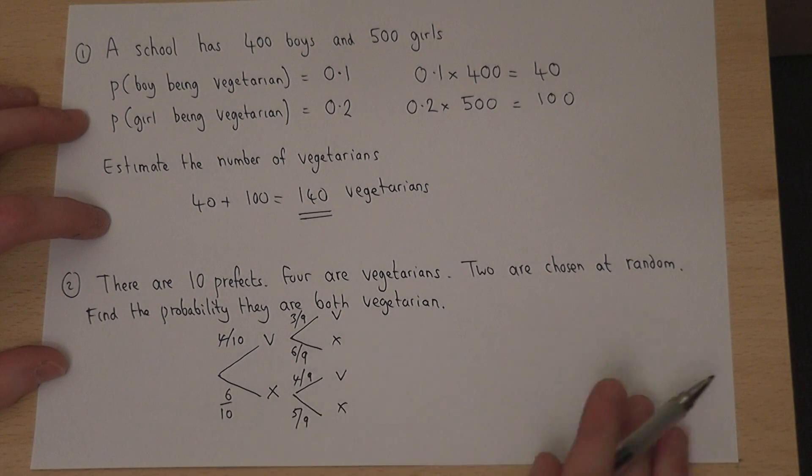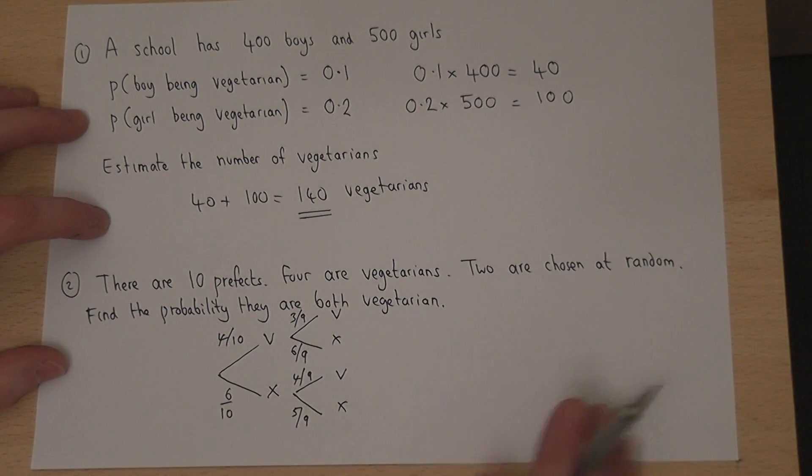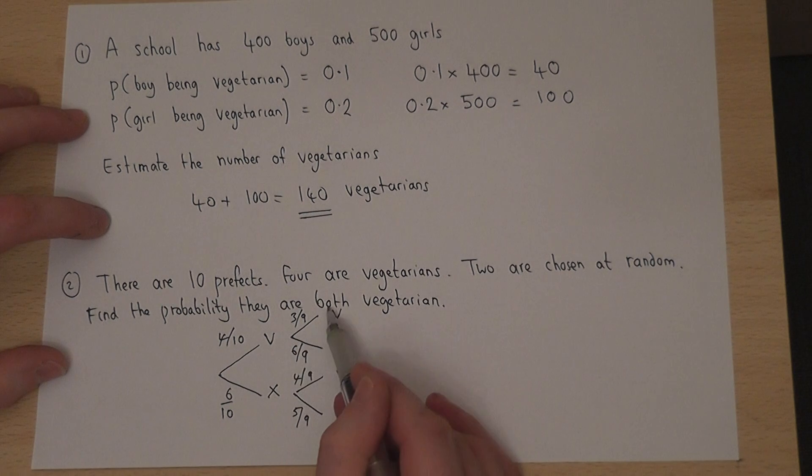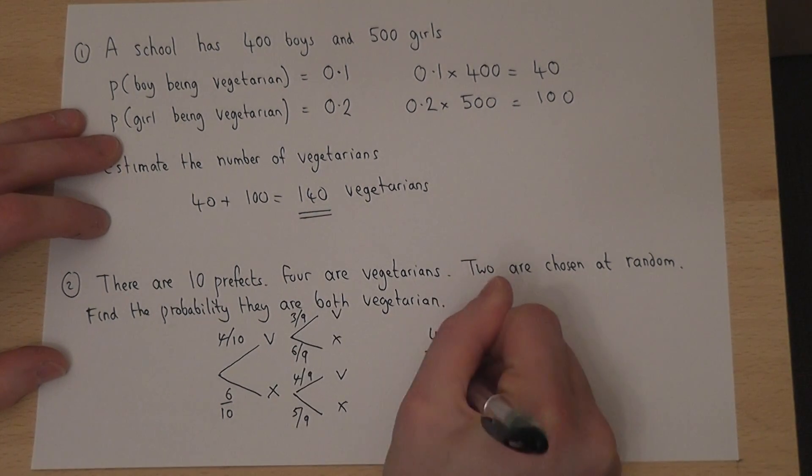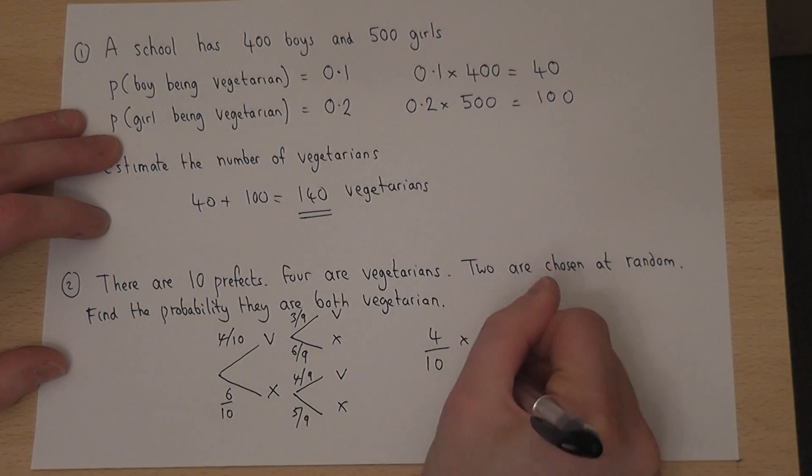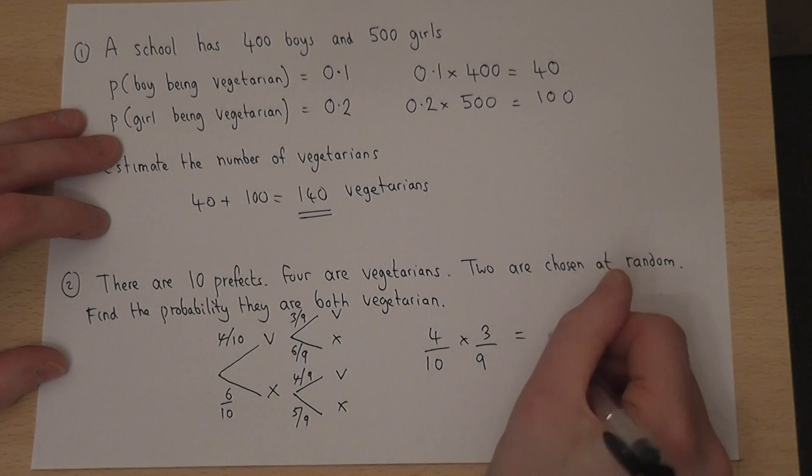So that's a quick tree diagram. So the chance that they are both vegetarian is that route there through the tree diagram. So we have to work out 4 tenths times by 3 ninths. Well 4 times 3 is 12,